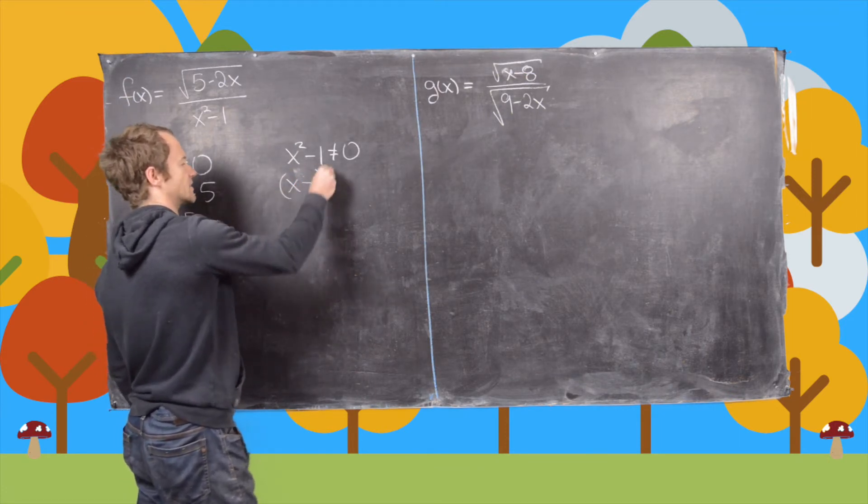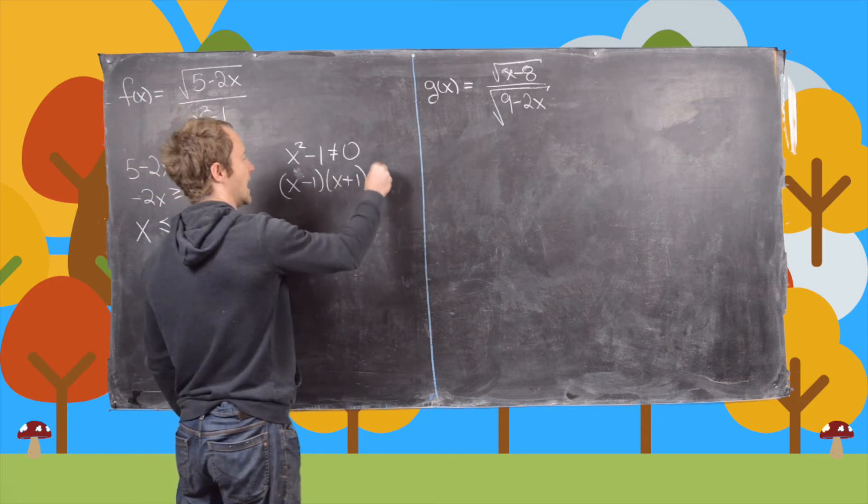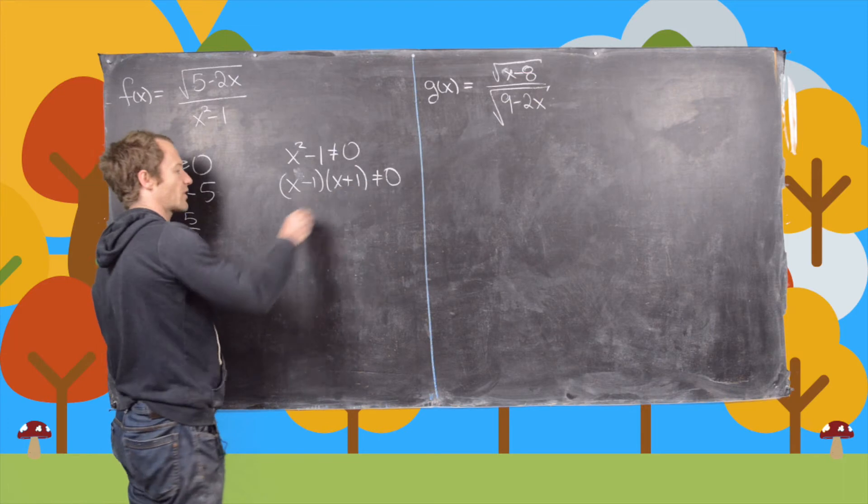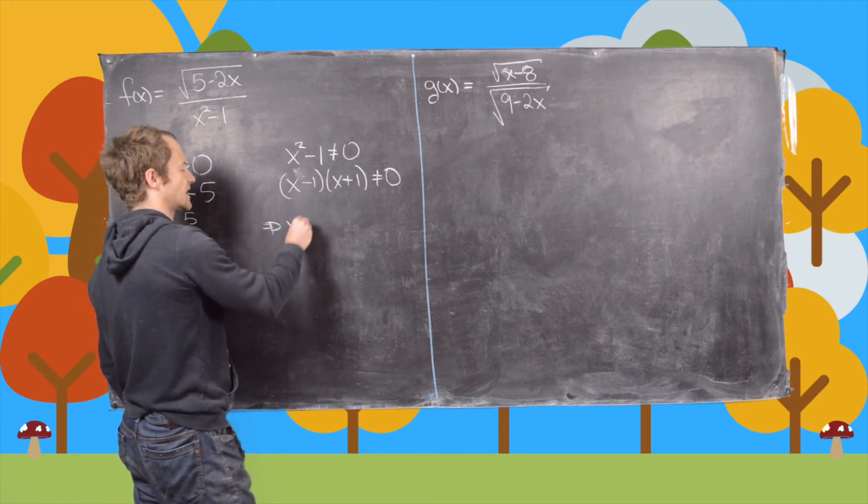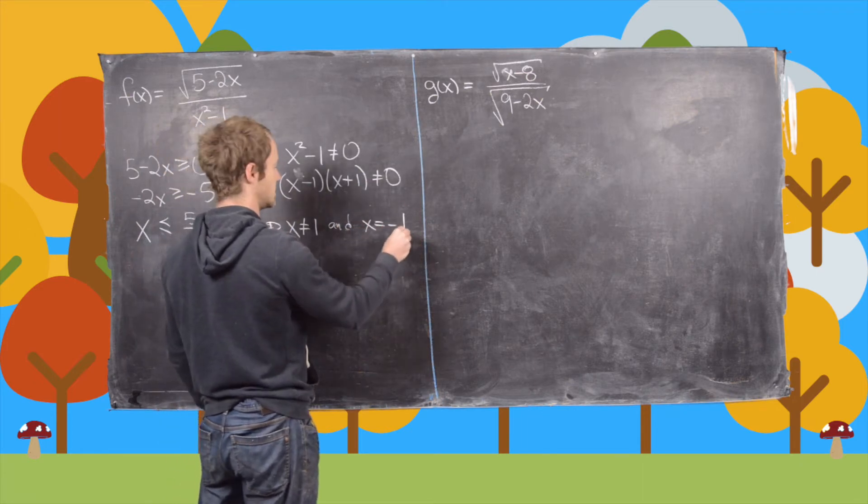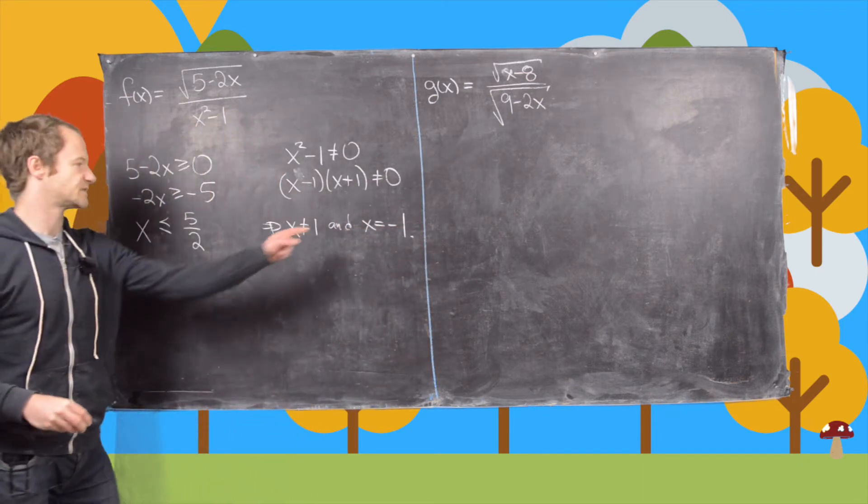Notice in this case we can factor and we get that product is not equal to zero. So if that product is not equal to zero, that means x cannot be negative 1 and x cannot be positive 1.